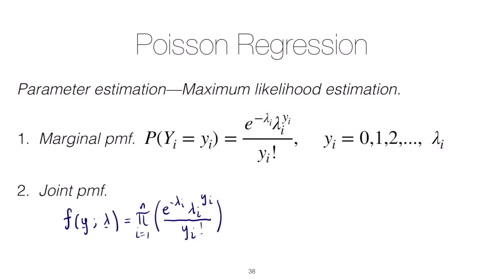So of course here our y i's are counts. They go from 0, 1, 2 up to unbounded, right, not up to lambda i.